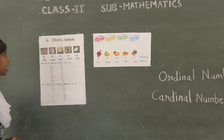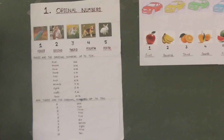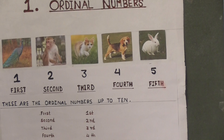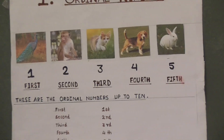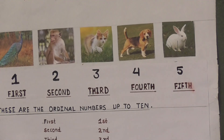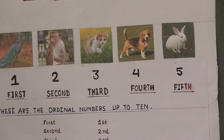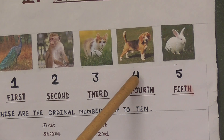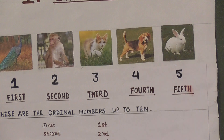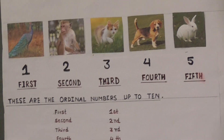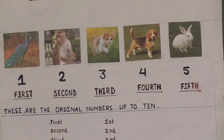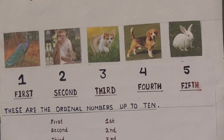Look at the animals in the chart. Let us now give them numbers: 1, 2, 3, 4, 5. So children, how many animals are there in total? There are 5 animals.